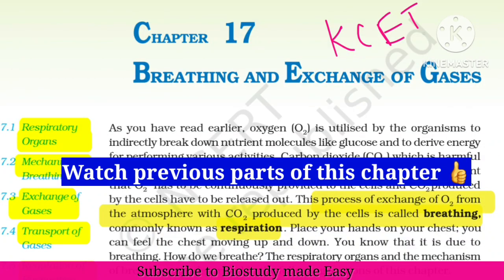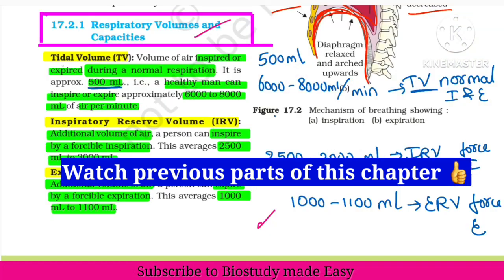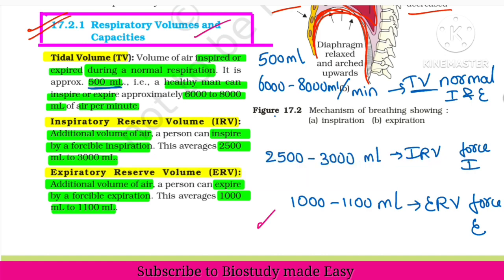This topic is important both for KCET and for NEET — human physiology can give maximum questions. For NEET, around 45% questions come from human physiology. Respiratory volumes and capacities is again an important topic; questions have come multiple times. It is very important for KCET as well. So first, tidal volume.